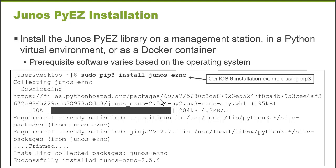There are some software prerequisites based on the operating system you're installing Junos PyEZ on. I'll reference you back to the Junos PyEZ Developer's Guide — it will list any prerequisite software for the supported operating systems. There were six or seven Unix packages I had to install before running the pip3 command, but it's very easy and quick to do. Once done, Junos PyEZ is installed and ready to manage Junos platforms.